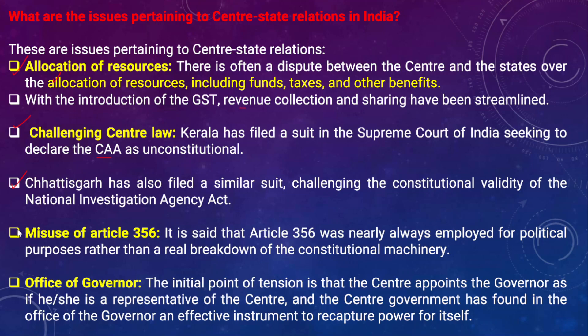In recent times, there has been frequent misuse of Article 356, seen in cases involving Karnataka, Maharashtra, Madhya Pradesh, Arunachal Pradesh, and Uttarakhand. The center has been using the governor as an instrument to overthrow democratically elected governments, especially in opposition-ruled states. Article 356 has been employed mainly for political purposes when different parties are in power at the center and in states, leading to a breakdown of constitutional machinery.